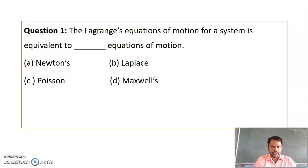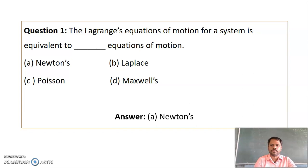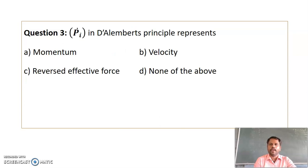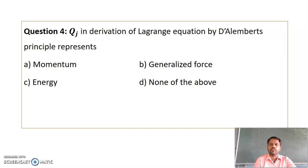Now let's have a small MCQ session. Question 1: The Lagrangian equation of motion for a system is equivalent to Newton's laws of motion. Question 2: The Lagrangian function is defined as L equals T minus V, so the answer is option B. Question 3: P_i dot in D'Alembert's principle represents the reverse effective force, so the answer is option C. Question 4: Q_J in the derivation of the Lagrangian equation by D'Alembert's principle represents the generalized force, so the answer is option B.